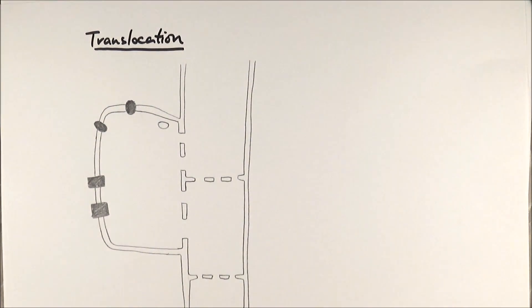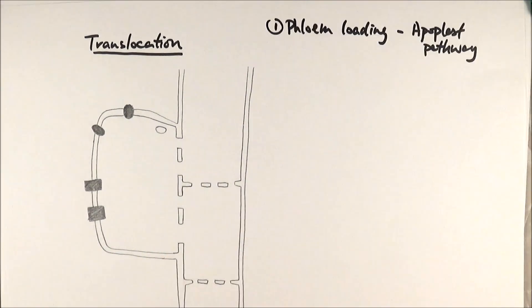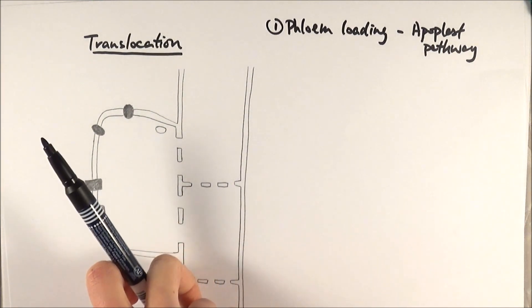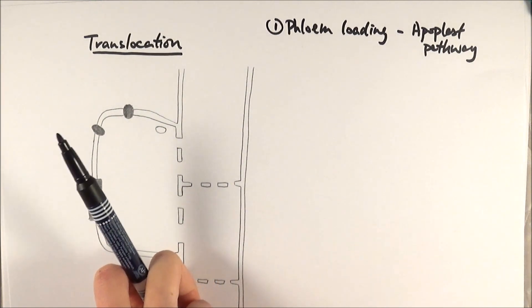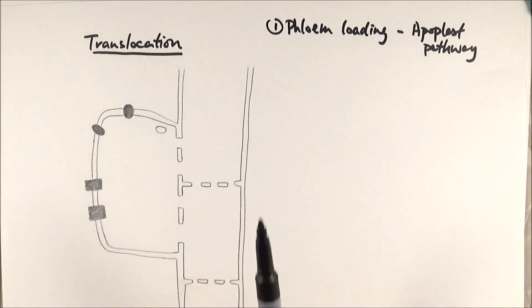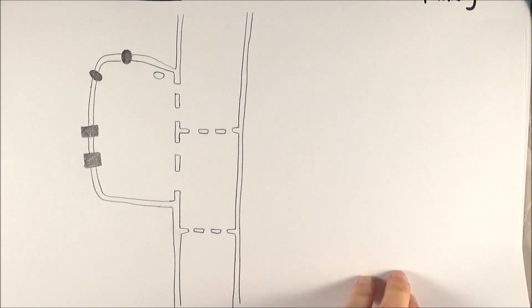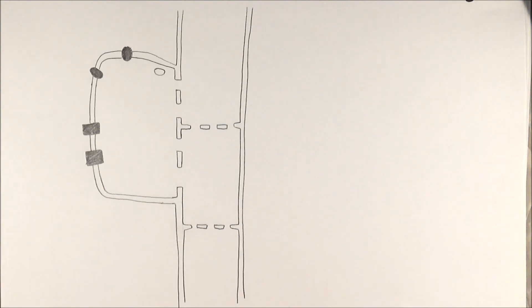We start with the first stage called phloem loading by the apoplast pathway. From previous chapters, you'll know that xylem transports water and mineral ions, and phloem transports sugars or assimilates. After sugar is made in the leaves, it needs to be loaded into the phloem to be transported to other parts of the plant. Before we go into detail, you need to know some phloem structures. This is the actual phloem, or we call it the sieve tube.